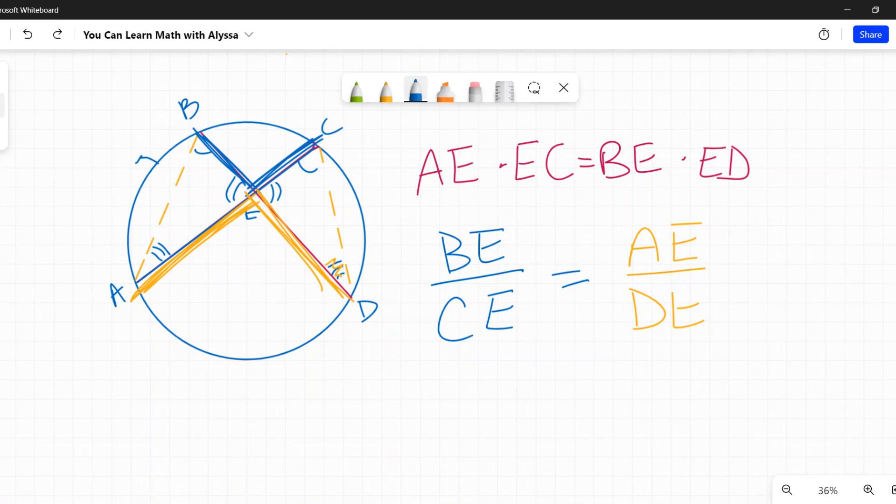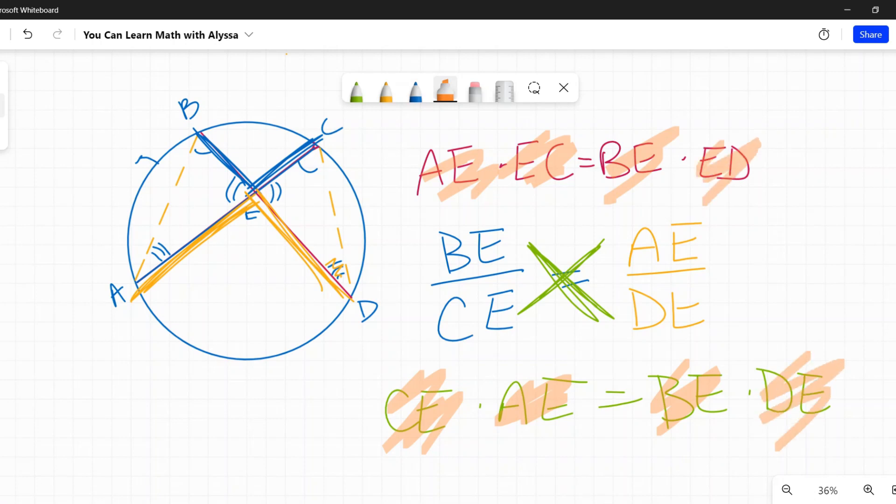Now I have this nice little fraction. Well, with fractions, you can cross multiply, and what do I get? I get CE times AE is equal to BE times DE. And now we have up here because there's my AE, AE times EC, EC and CE, same thing. They're both referring to this line right there. And on this side, I have BE times ED. DE is the same, both referring to this line.